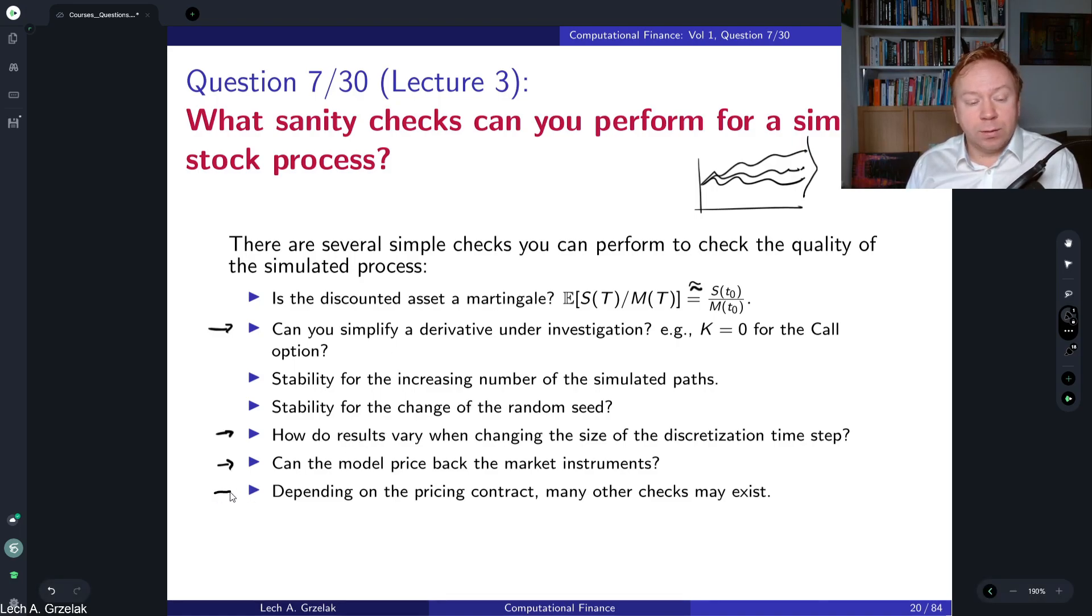And of course, another one here we cannot explain all type of sanity checks because these are only the obvious ones that we could have. The other ones may really correspond to the type of pricing contract you have. So for example, if you have American option or Bermudian type of option, if you deal with exercise dates, then the option should also collapse to, for example, European type of payoff.